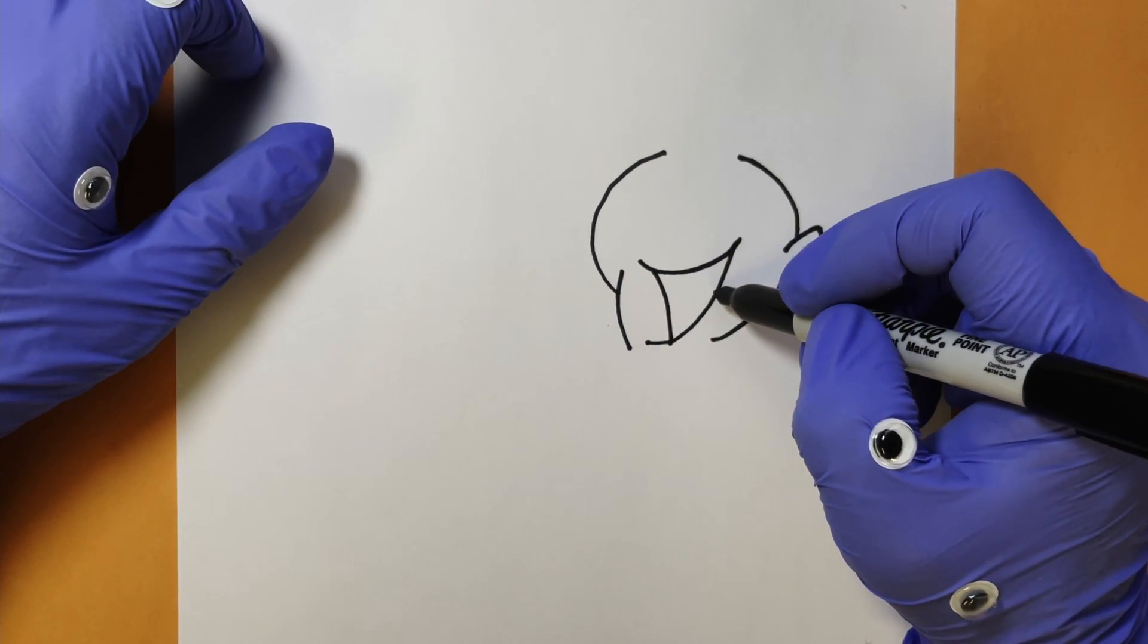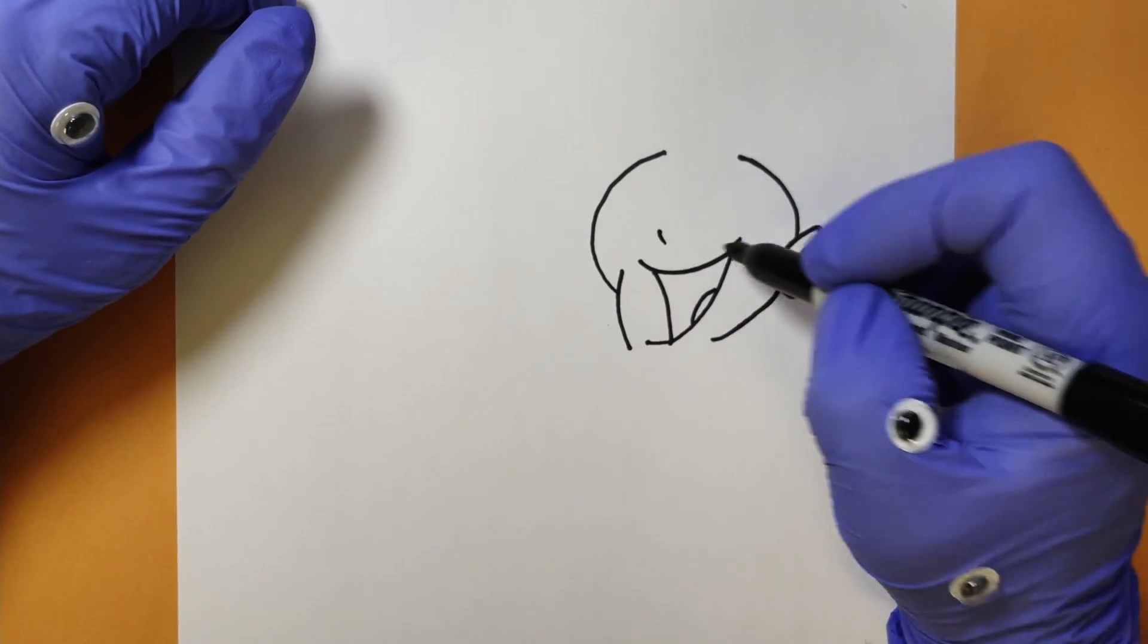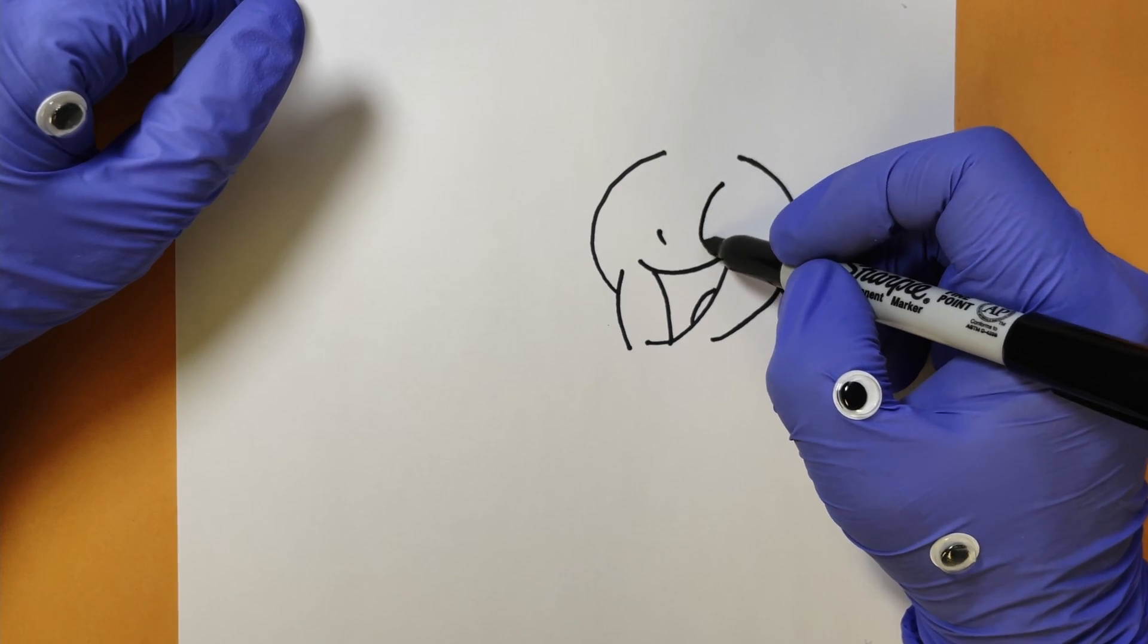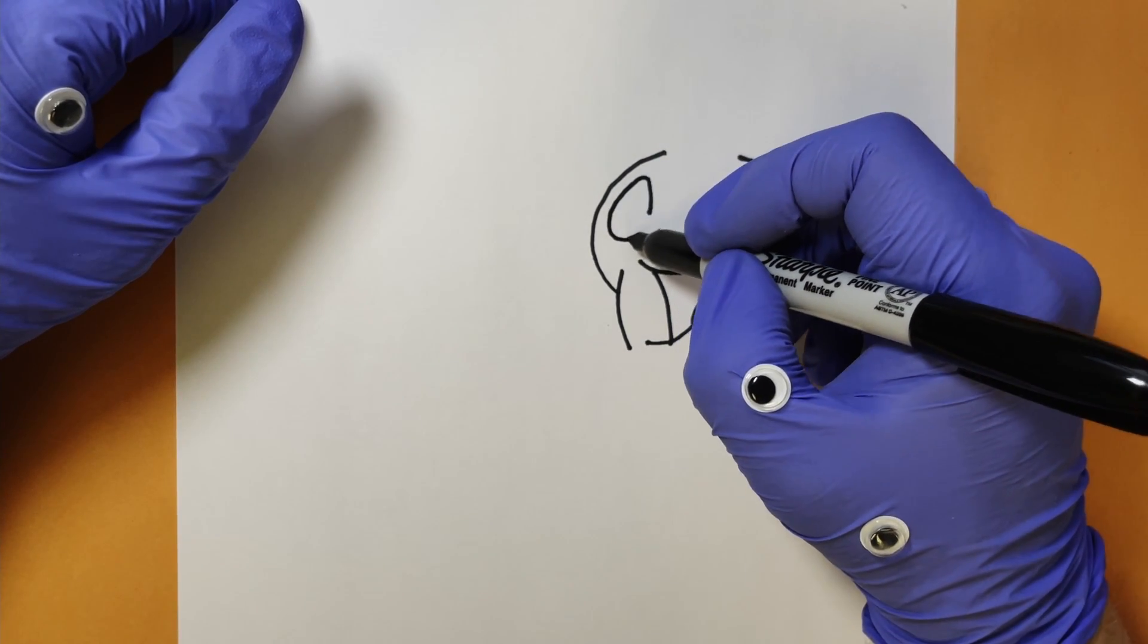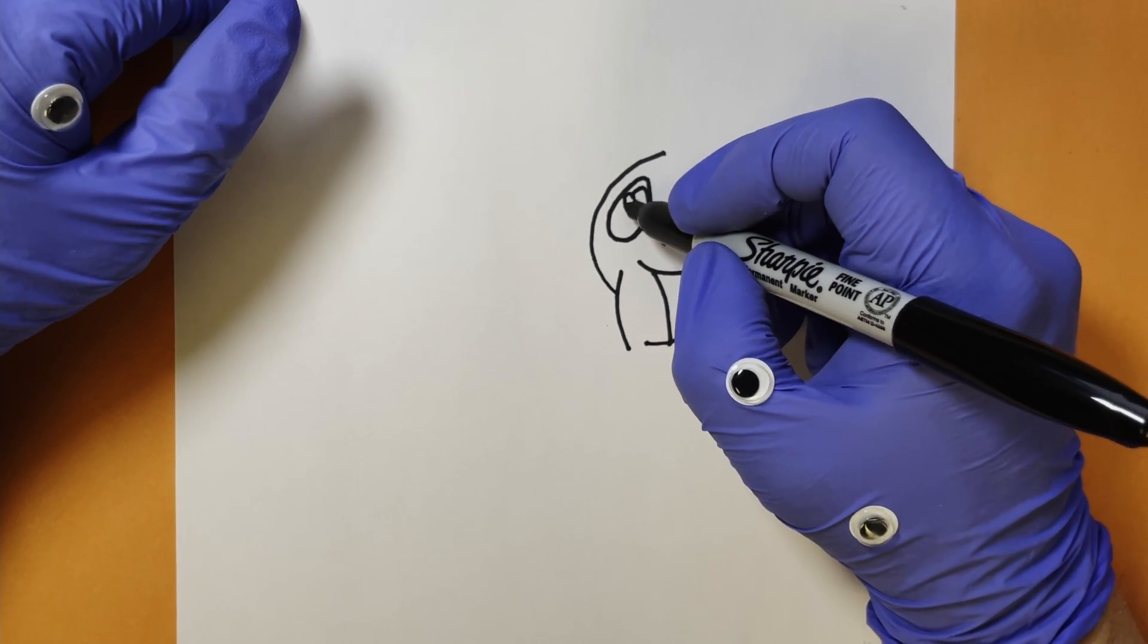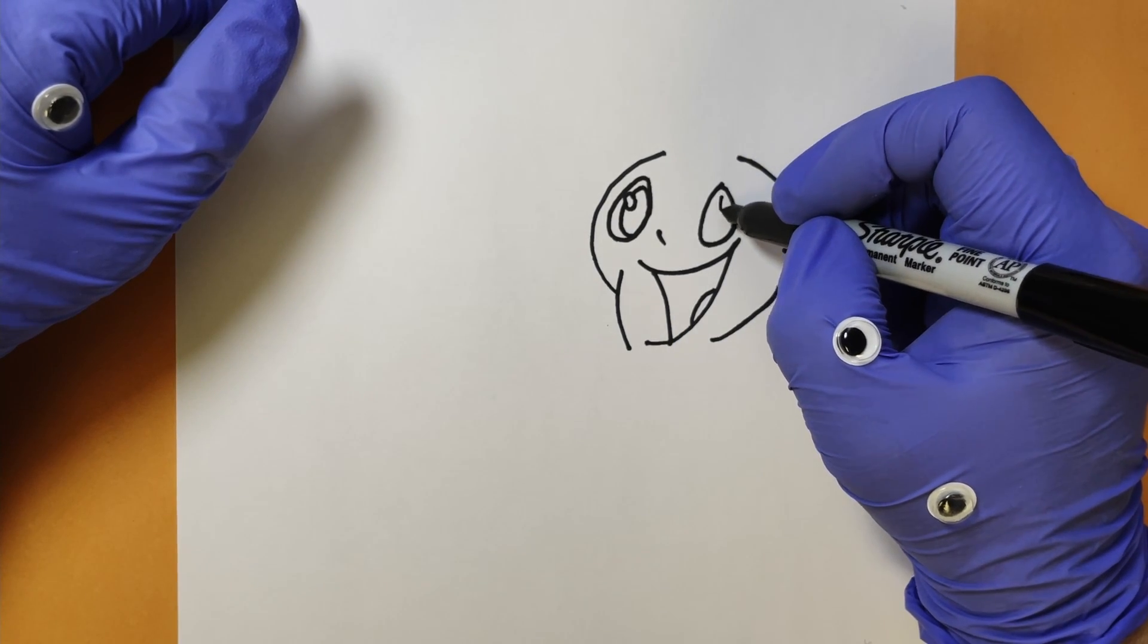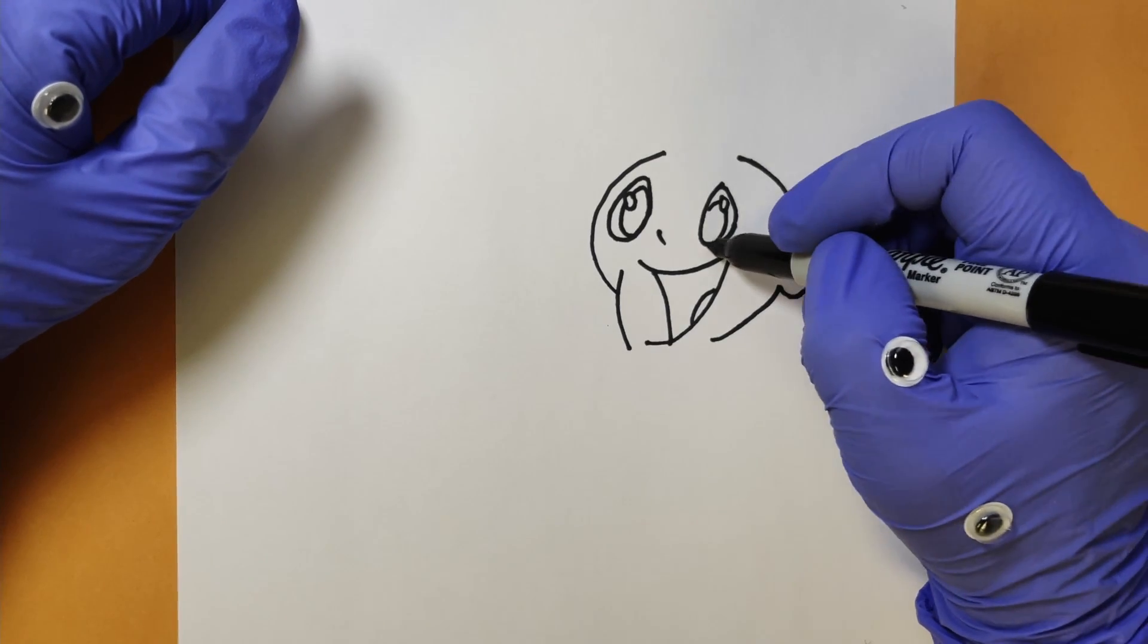This is gonna be fun. There's a tongue for you, little nose there. Let's give him some eyes right about here and there. We'll make them big with a bit of highlight on them, and then we can do another highlight here. Just like that.